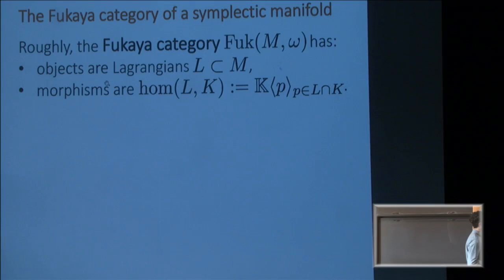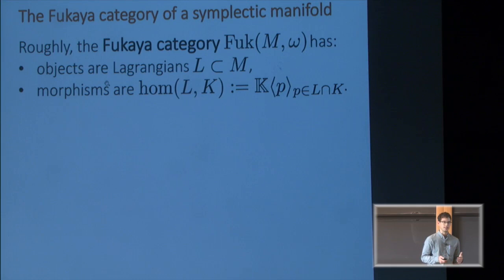The Fukaya category is a way of encoding all or a large collection of the Lagrangians inside of M and an intersection theory which is robust in some symplectic sense. So this is something like a category. The objects are the Lagrangians.